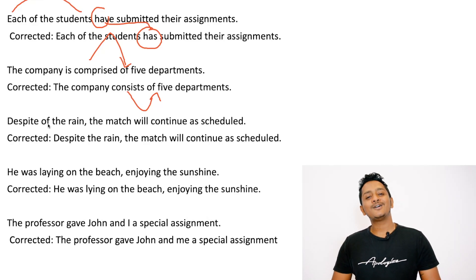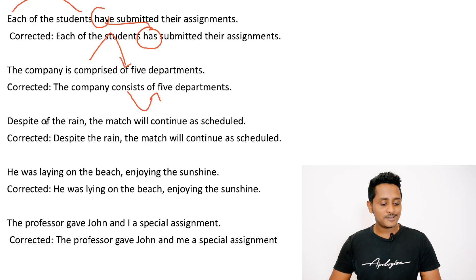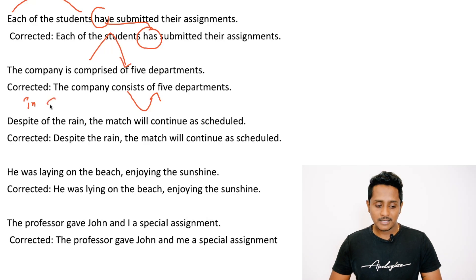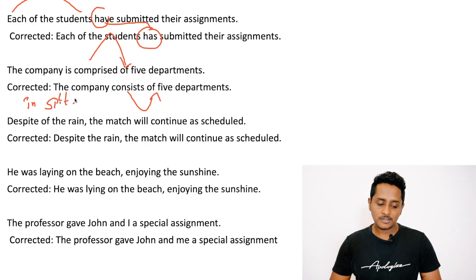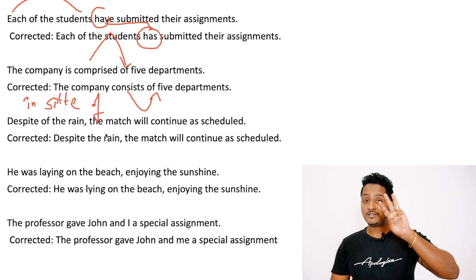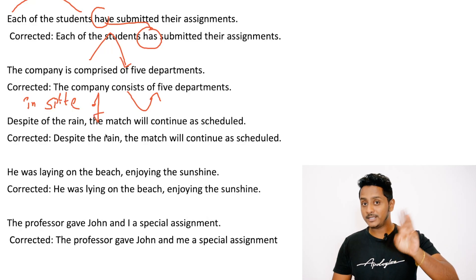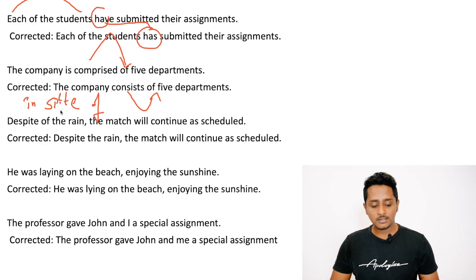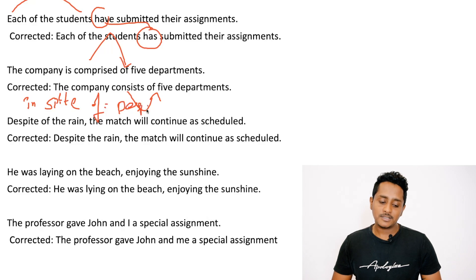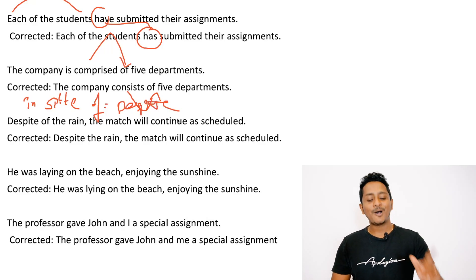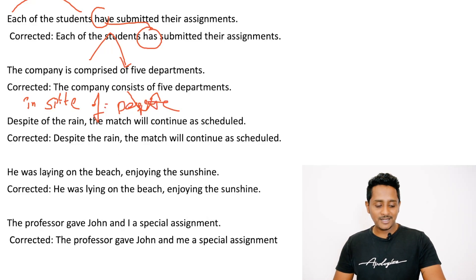'Despite of' is the wrong statement — it's 'in spite of'. Look at the spelling: I-N space S-P-I-T-E space O-F. There are two spaces in between; it's three separate words: in spite of. This is equal to 'despite'. 'Despite of' is wrong grammar — it's either 'despite the rain' or 'in spite of the rain'.